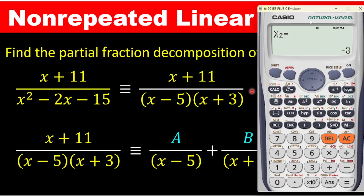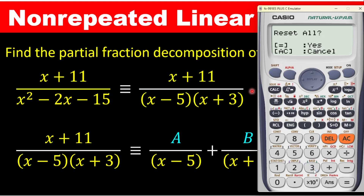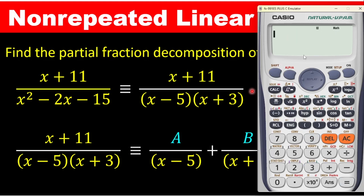Since I had the calculator in quadratic mode, I have to clear it first. To do that, press shift, then press 9, then press 3, and then click the equals button. That means I have now cleared the calculator from the earlier quadratic function.